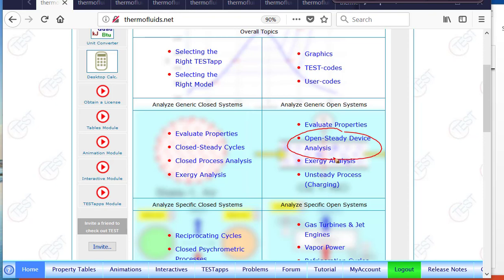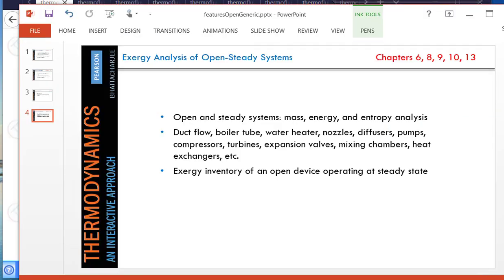We are simply going to add exergy analysis to that problem we solved in that particular feature video. So where can you find more information about exergy? Exergy is covered in chapter 6 of your textbook. In addition to the analysis we have done in the previous video, we are going to talk about exergy inventory for a particular device. In this specific example we'll pick a turbine, although the same thing can be applied to a whole slew of open steady devices that operate at steady state.